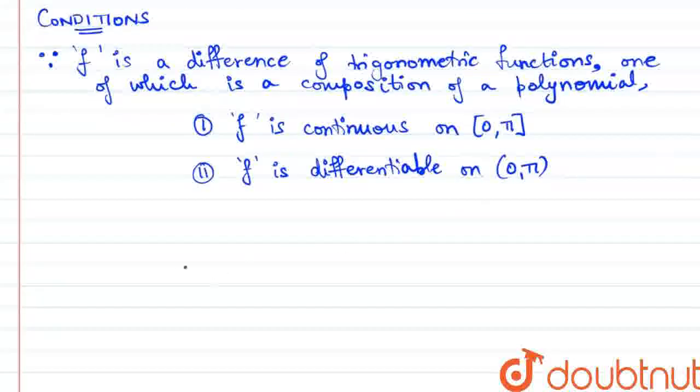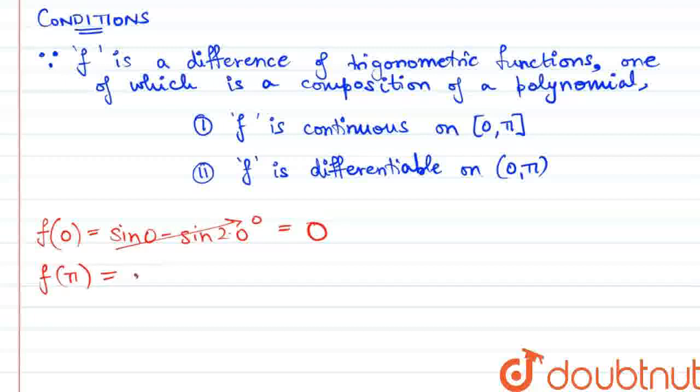Now, let us evaluate f at both the endpoints. f of 0 is going to be sin 0 minus sin 0, which will be equal to 0 simply. f of pi is going to be sin pi minus sin 2 pi, which is 0 minus 0 or 0.